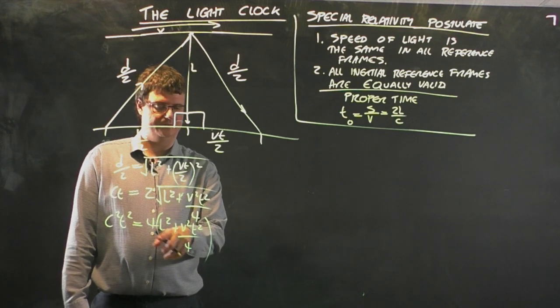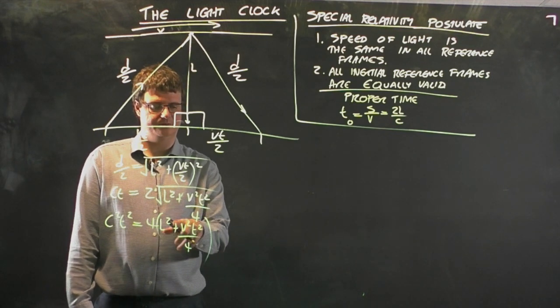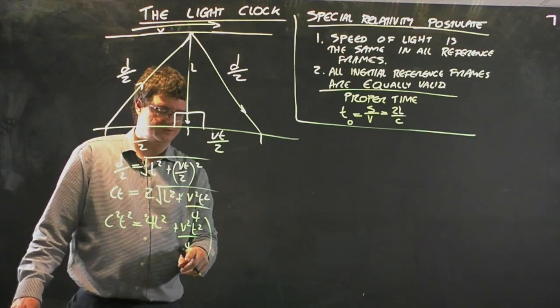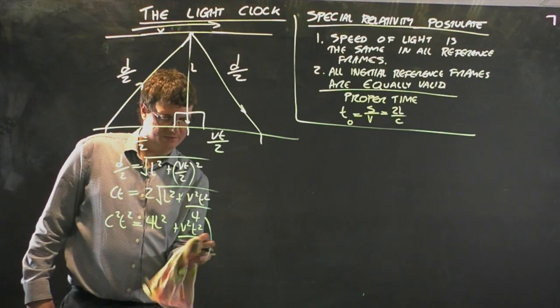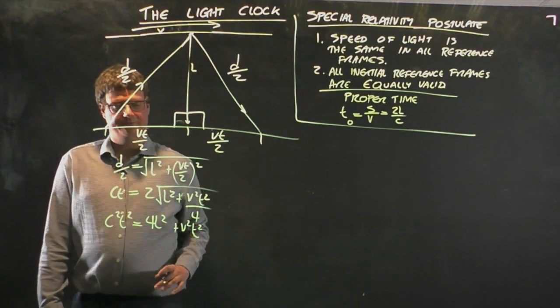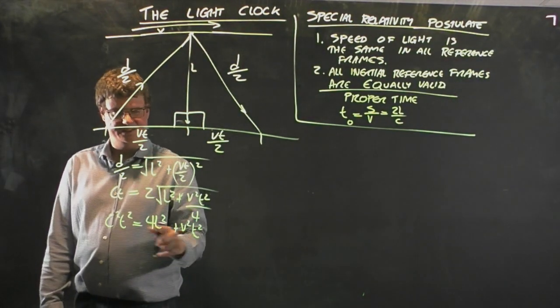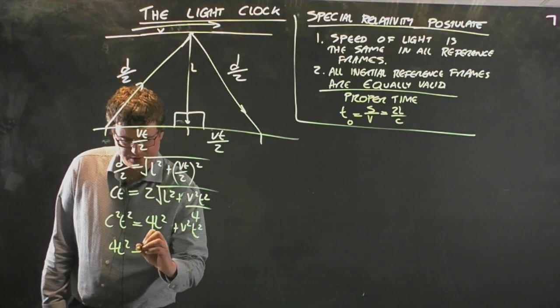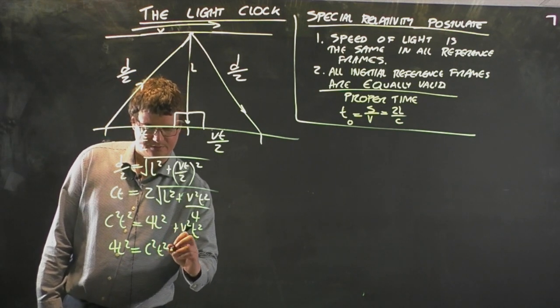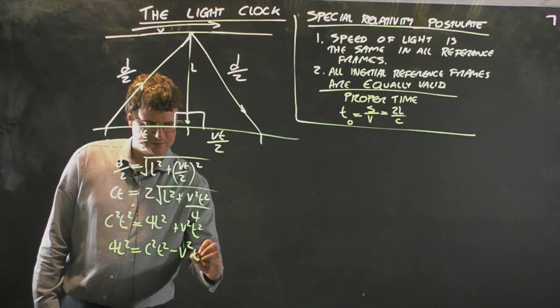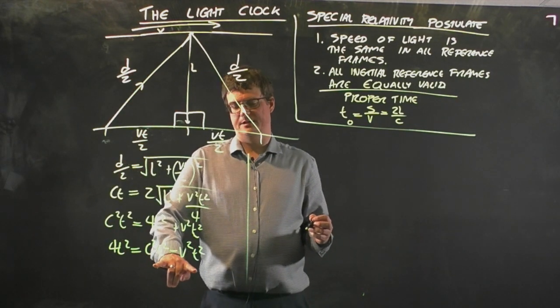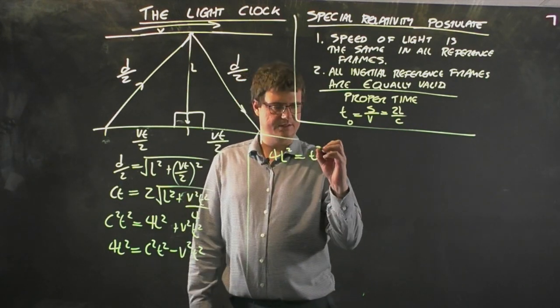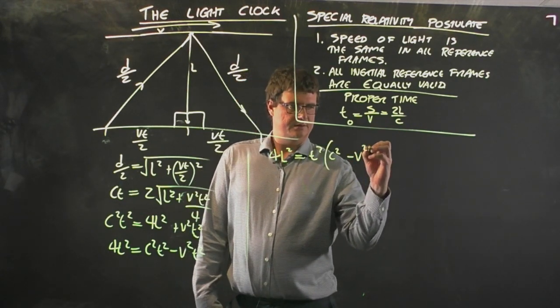The distance light travels is equal to the time it takes times the speed of light. So Ct is equal to that string. I'm gonna square everything to get rid of this radical. So C squared T squared is equal to 4 lots of L squared plus V squared T squared on 4. I can cancel this with this and it'll just be 4L squared.